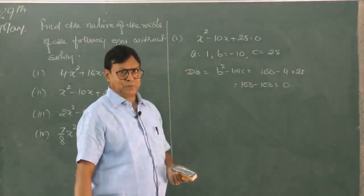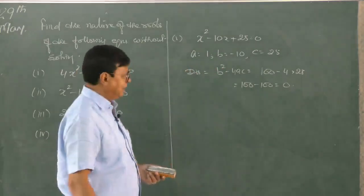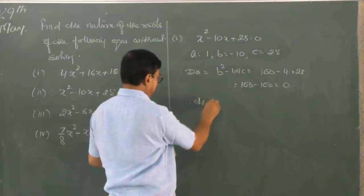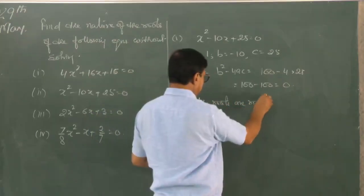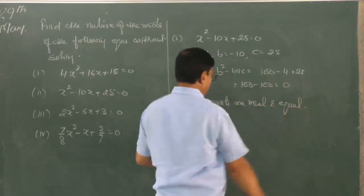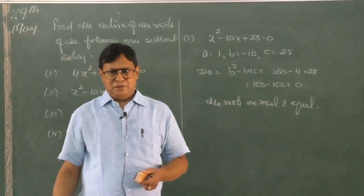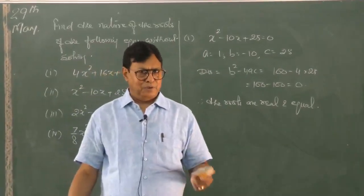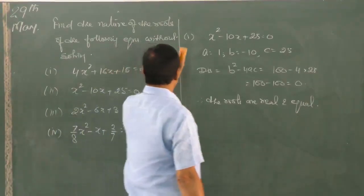The discriminant is 0. If the discriminant is 0, the roots are real and equal. What you have to do is just find the discriminant, look at the value, and write the nature.